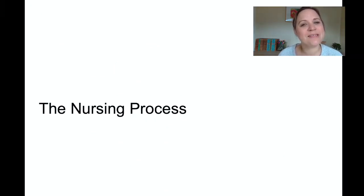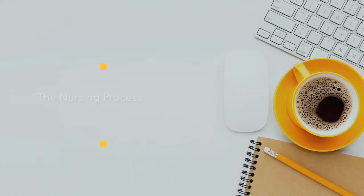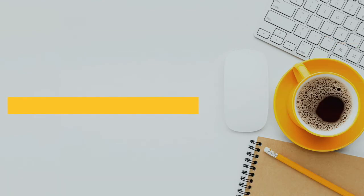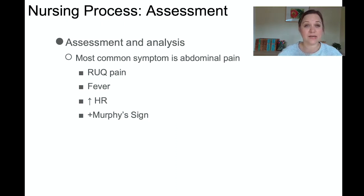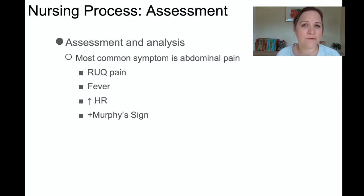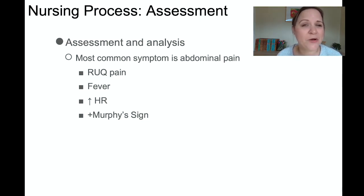Let's go through the nursing process as it relates to cholecystitis. When you suspect someone has cholecystitis, you're going to notice right upper quadrant pain, fever, tachycardia, abdominal distension, and belching. You can also elicit a positive Murphy sign: pressing down on the right upper quadrant and asking the patient to take a deep breath — if that causes pain, that's a positive Murphy sign.